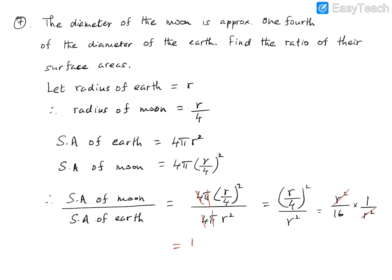So the ratio of the surface area of the moon to the surface area of the earth is 1 over 16. In other words, the surface area of the moon is 16 times smaller than the surface area of the earth. The trick here is to assign a variable to one parameter, then express the other in terms of it. When doing ratios, keep the formulas as they are so common terms cancel out and simplify the calculation.